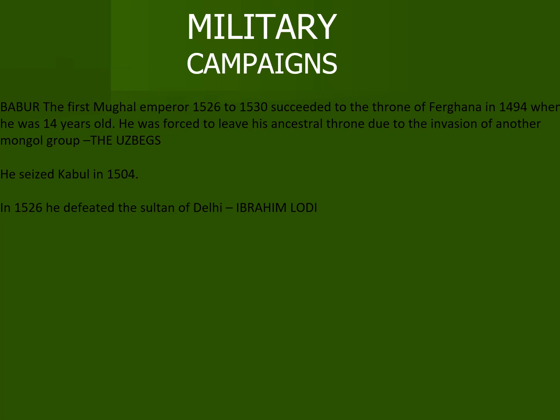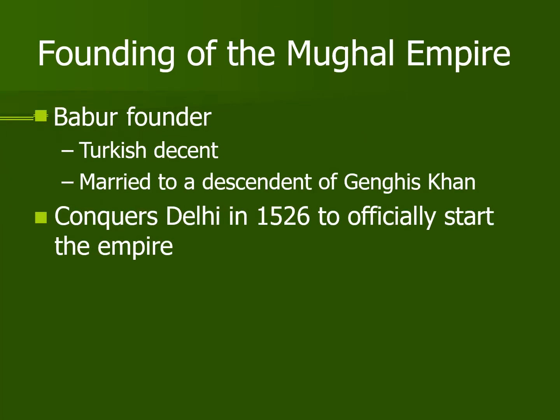There is a chart given in your book which describes the major campaigns and events. Babur defeated Ibrahim Lodi and also defeated Rana Sangha along with the Rajput rulers and their allies. He defeated the Rajputs and the Chanderis at Chanderi and established control over Agra and Delhi.